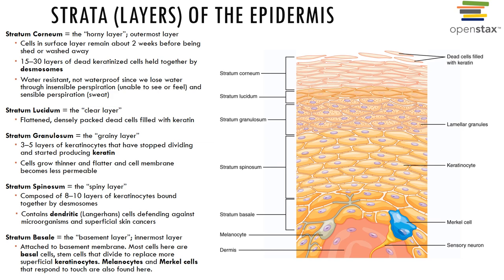The next layer, the stratum spinosum, also called the spiny layer, contains cells attached by desmosomes. You see abundant melanin granules and dendritic Langerhans cells here, which help protect and are part of our immune system. This layer is also metabolically active, several layers thick, and has some mitosis but reduced from the basal layer below.